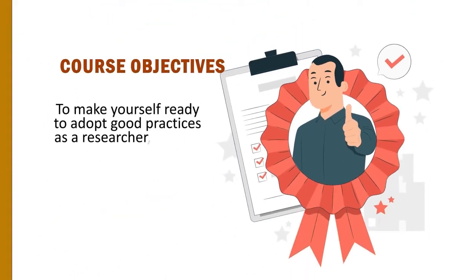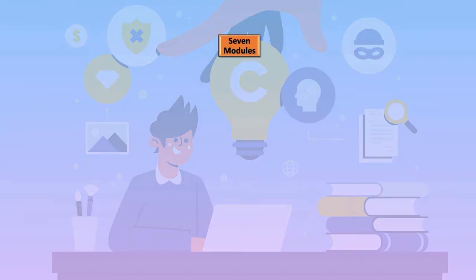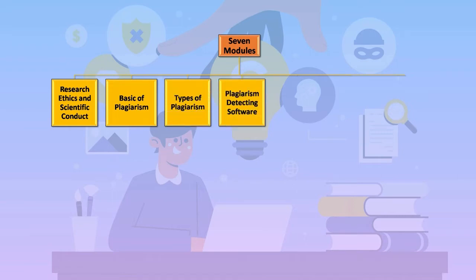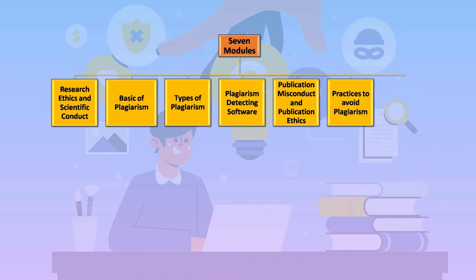This course will make you ready to adopt good practices as a research mentor and guide. We have structured this course into weekly modules. The course is 8 weeks in duration but contains 7 modules: research ethics and scientific conduct, basics of plagiarism, types of plagiarism, plagiarism detection software, publication misconducts and publication ethics, practices to avoid plagiarism, and UGC regulations and policies to avoid plagiarism in India.